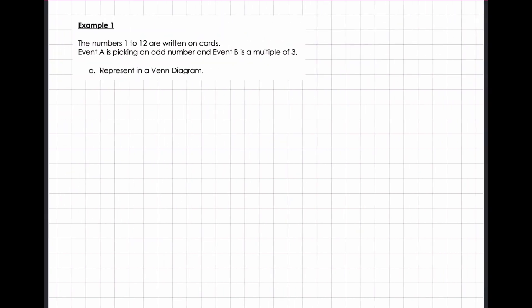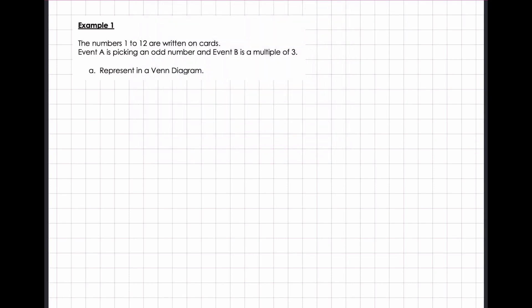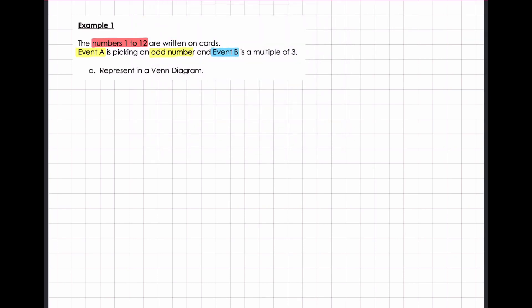Alright, the numbers 1 to 12 are written on cards. Event A is picking an odd number and event B is picking a multiple of 3. So we have the numbers 1 to 12 written on a card. Alright, so if we start with our sample space, our sample space are the values that we have on our cards, which are 1 to 12.